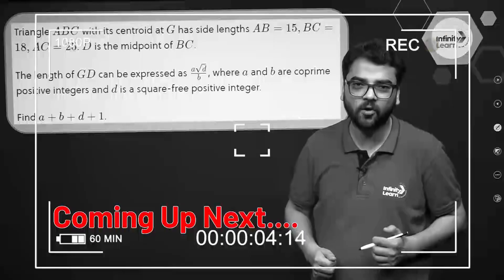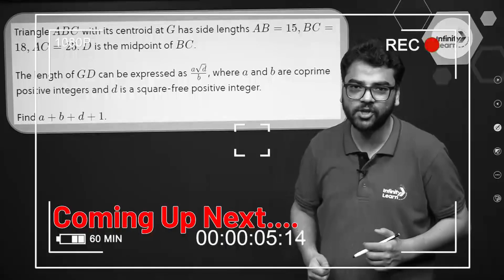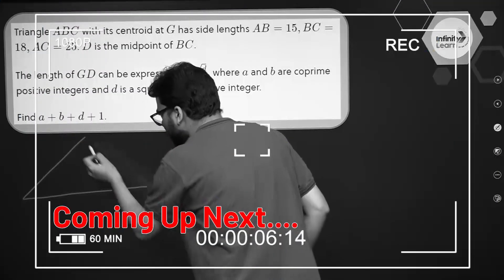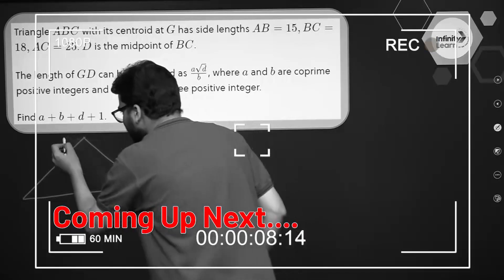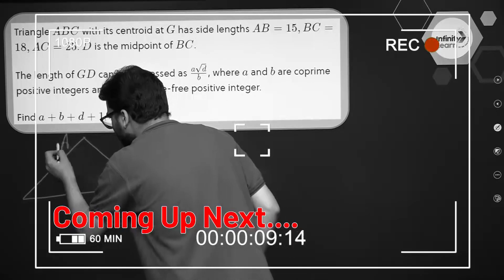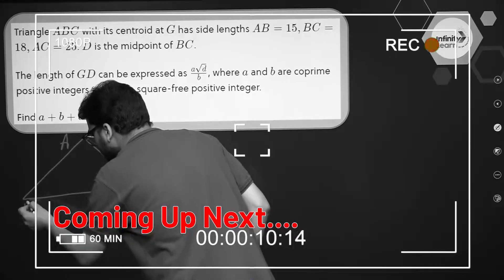Let's first make the figure according to the given question. We'll make the triangle in rough — that is A, B, and C.